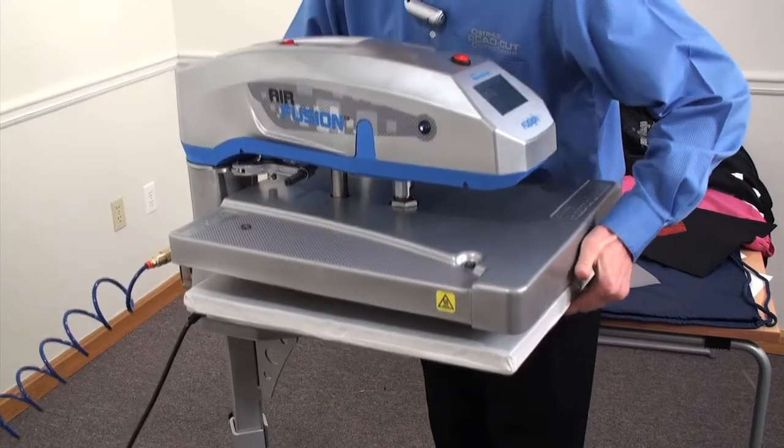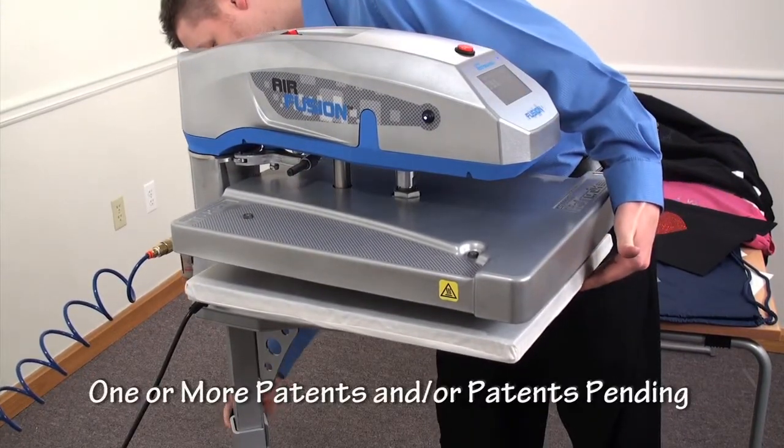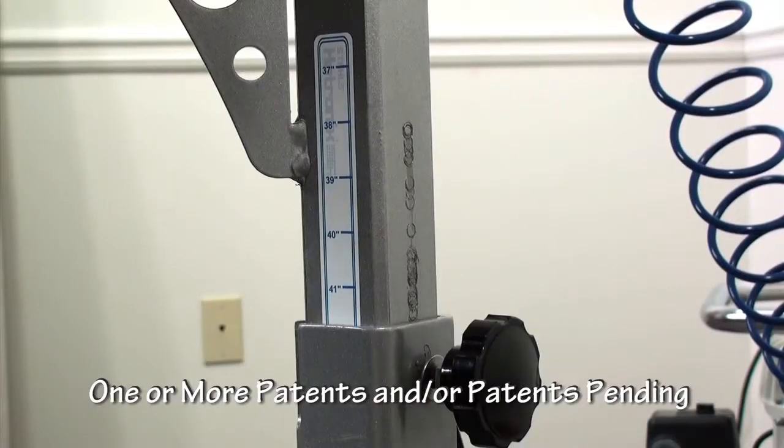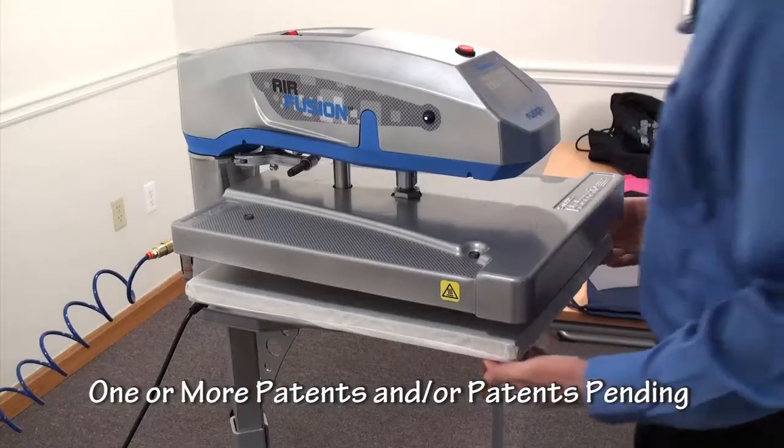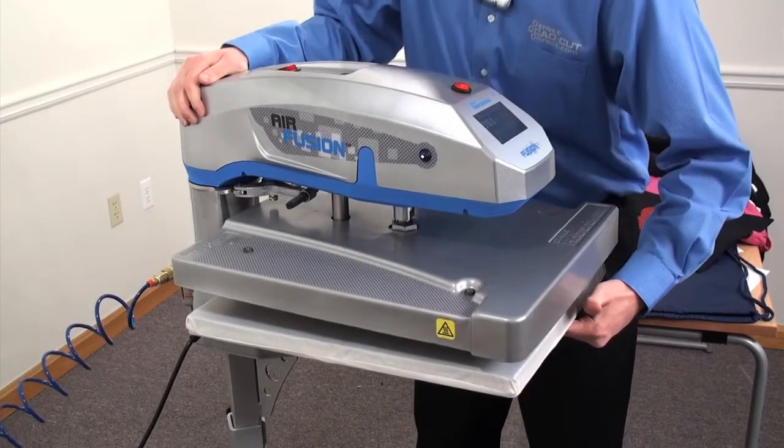First is the preference of working height. The Hotronix air fusion introduces the first height adjustable stand for working height adjustments from 37 inches to 44 inches. So whether you're four foot six or six foot six, each operator can easily adjust the press to their optimal height for operation.